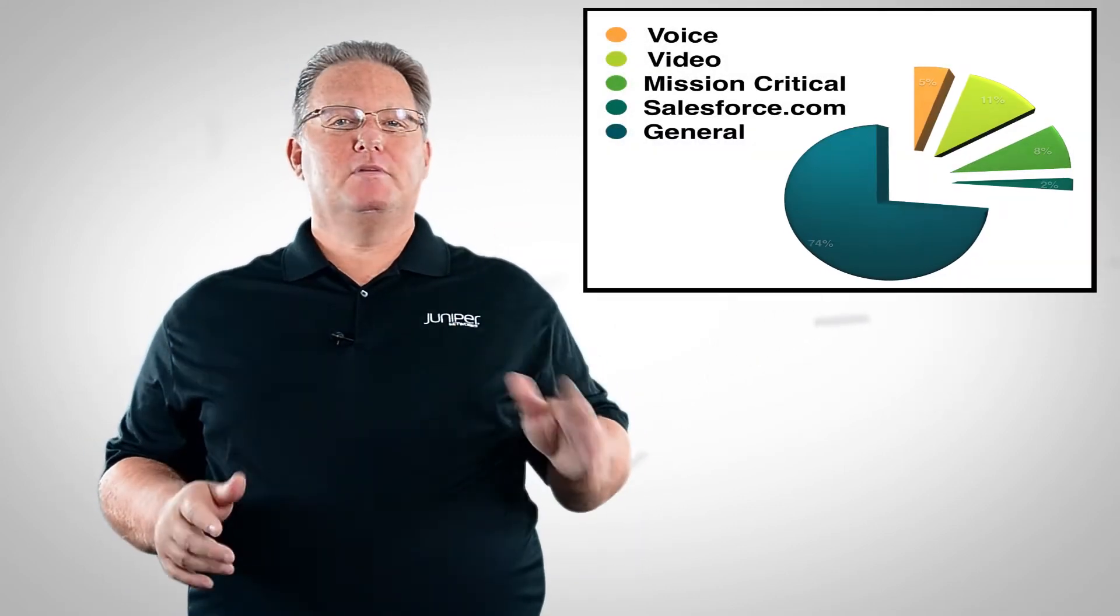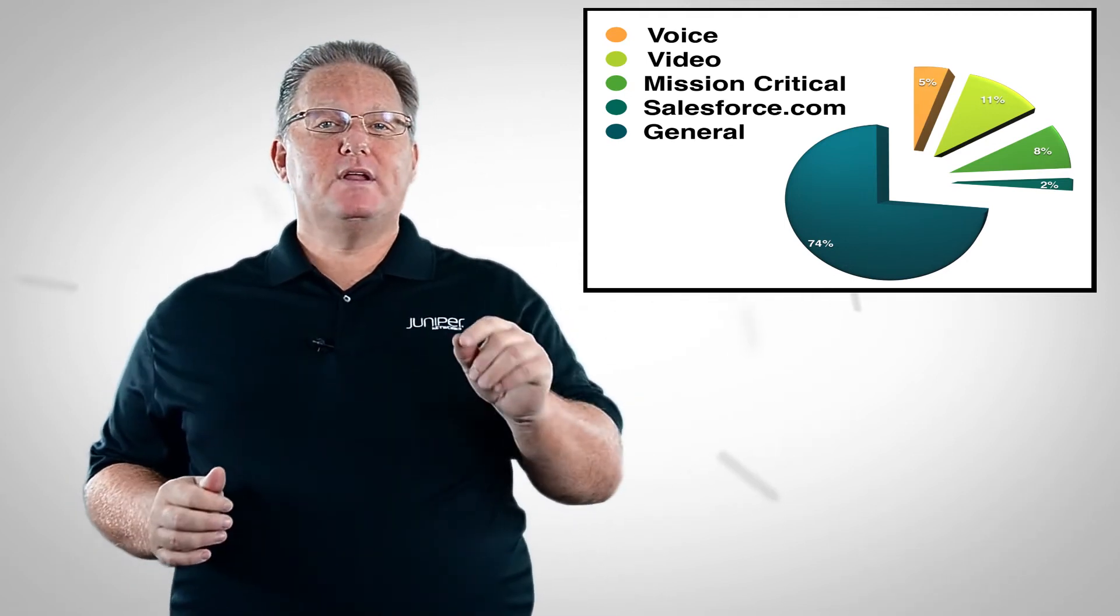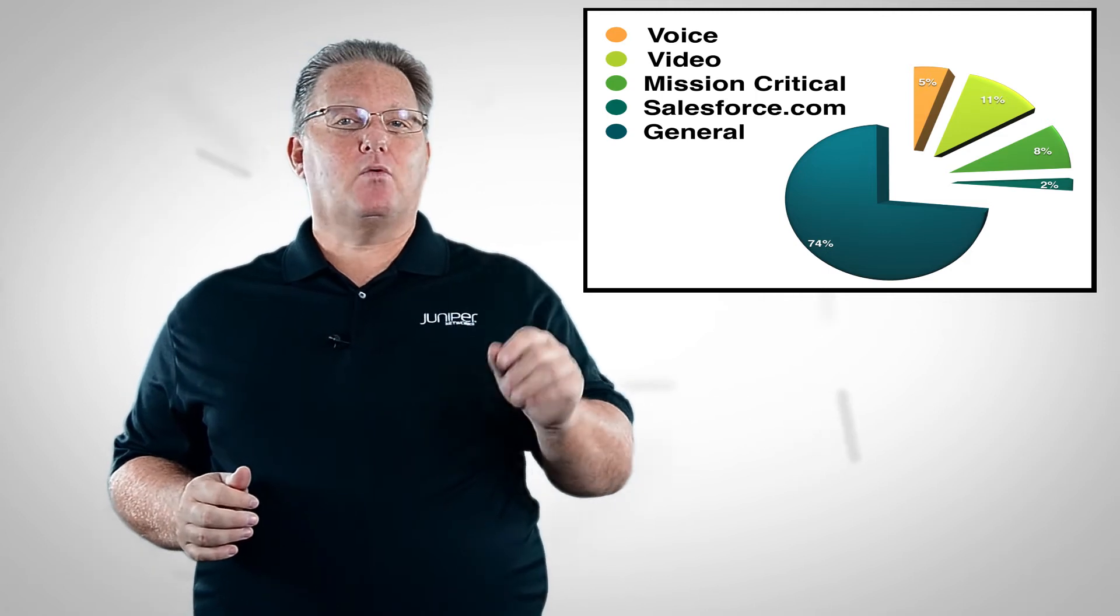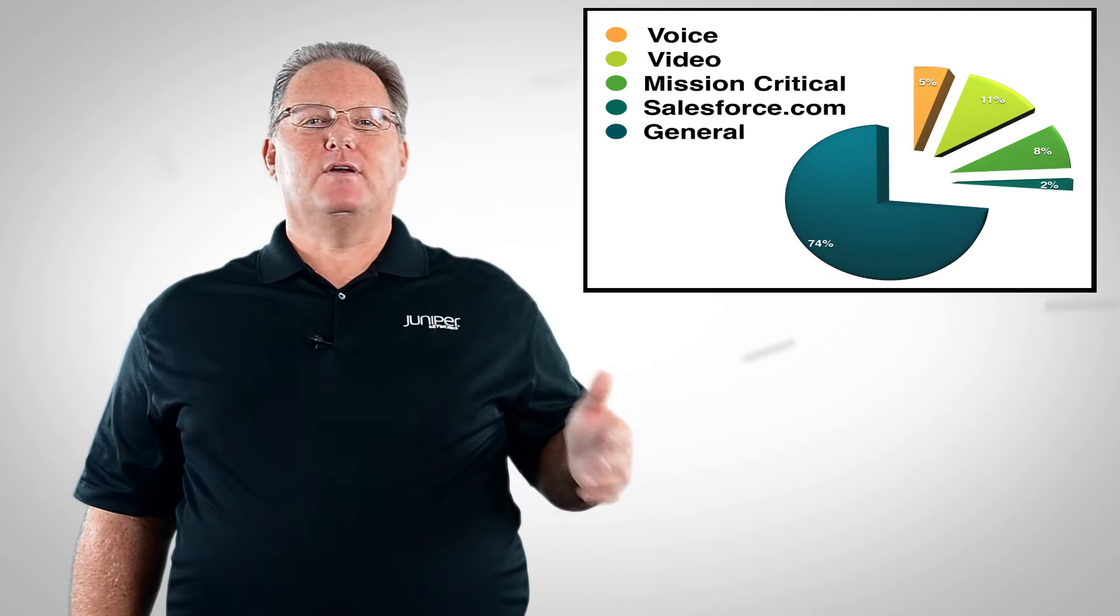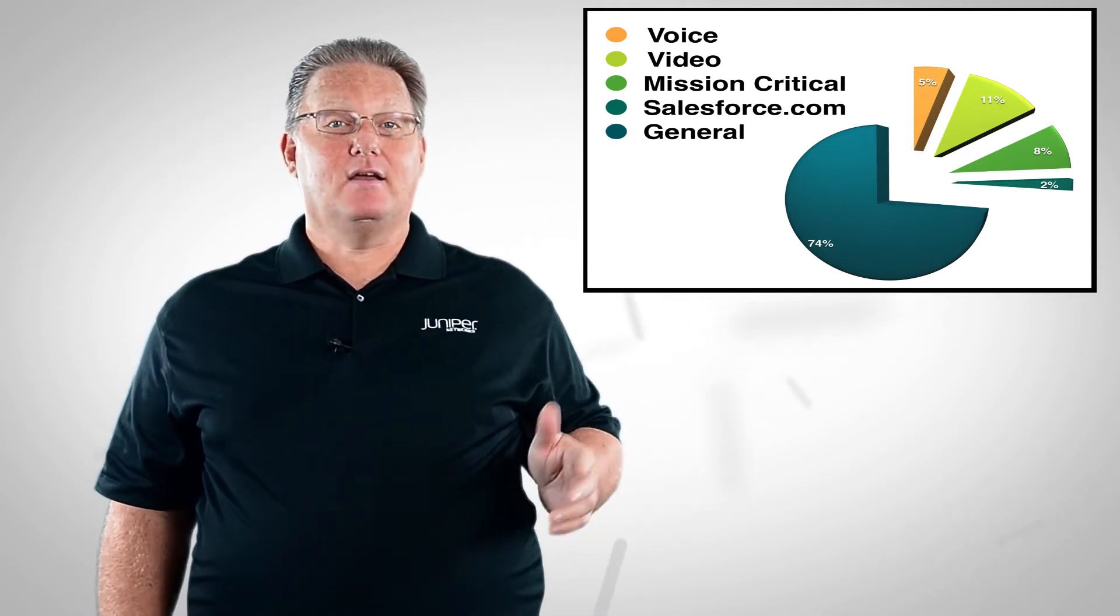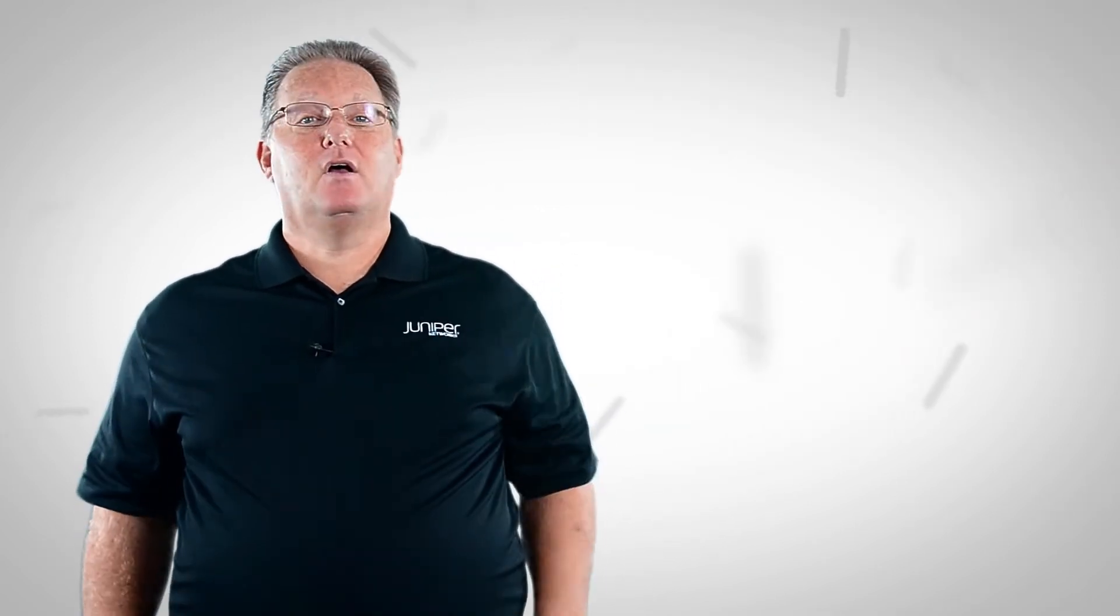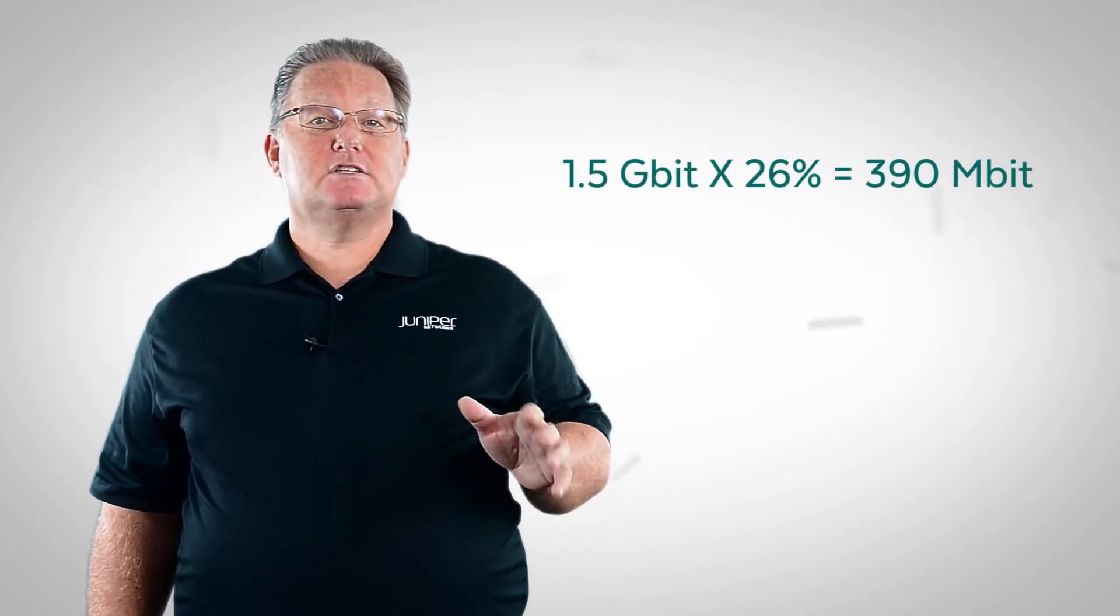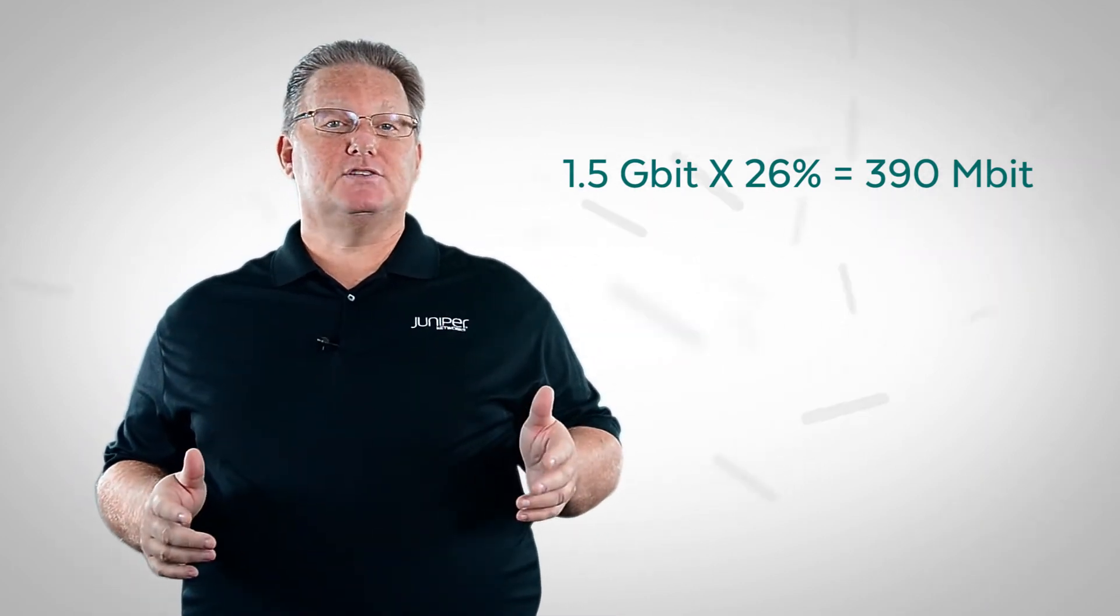So we can see that voice, video, mission critical apps, and salesforce.com are the apps that matter. They total just 26% of the traffic running across path A during the failover. So when path B fails, we need to be able to run at 150% of the bandwidth of path A to fully accommodate the traffic on path B and have no traffic drops. That would be 1.5 gigabits. So taking 26% of this means we would need 390 megabits of bandwidth to accommodate all of our business critical applications and services.